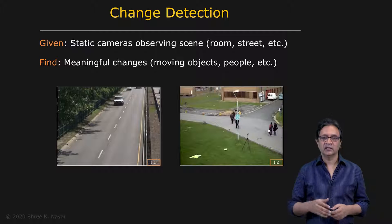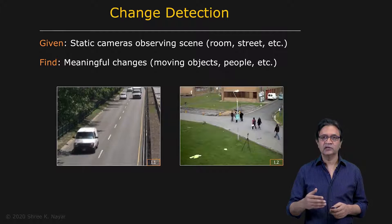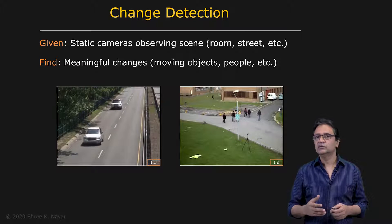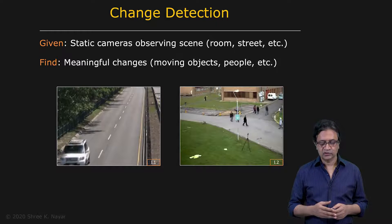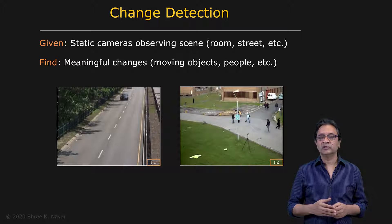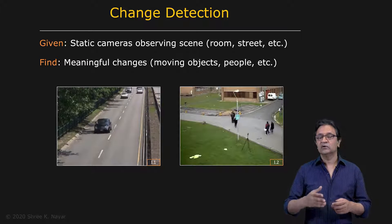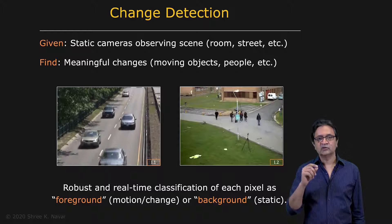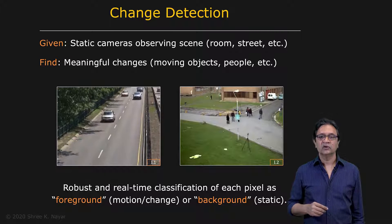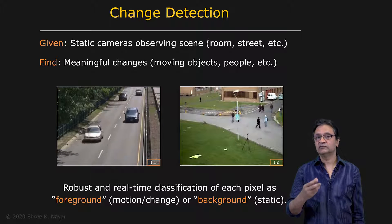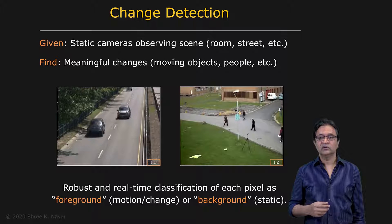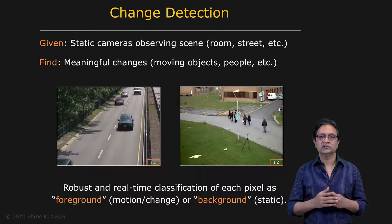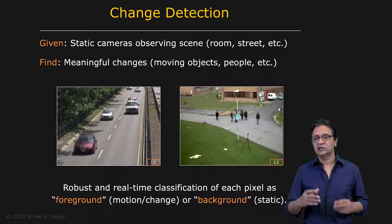Here is the problem. We're given a static camera which is observing a scene — it could be a room, a street, etc. We want to find meaningful changes, which are moving objects. Objects could be cars or vehicles on a street, or people moving around in a crowded area. Technically, the problem is the robust and real-time classification of each pixel as belonging to the foreground — a meaningful change — or belonging to a static background. It is a foreground-background classification problem.